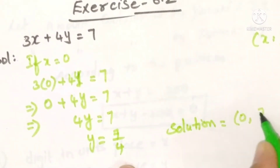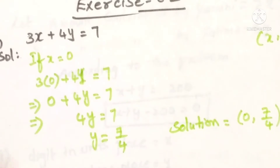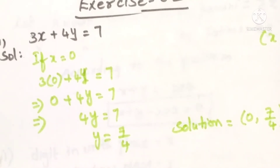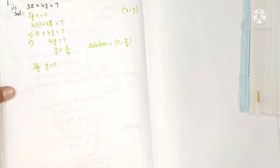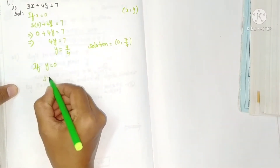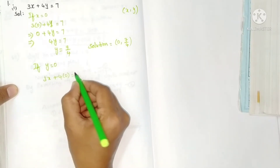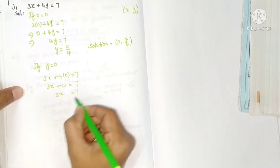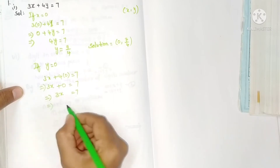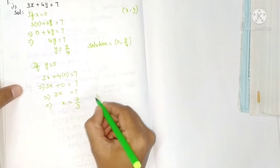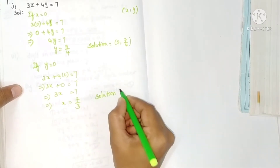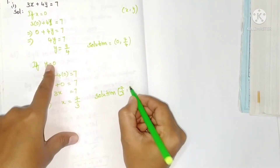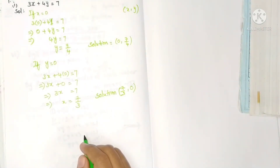For x = 0 we got y as 7 by 4, so the first solution is (0, 7/4). Next, for the second solution, take y = 0. Substituting: 3x plus 4 into 0 equals 7, so 3x plus 0 equals 7, giving 3x equals 7, so x equals 7 by 3. The solution is (7/3, 0).